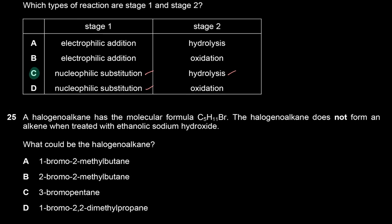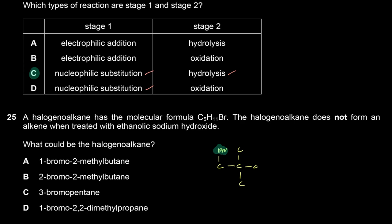A halogenoalkane with molecular formula C₅H₁₁Br does not form an alkene when treated with ethanolic NaOH — it does not undergo elimination. For elimination, the neighboring carbon must have a hydrogen. Here, the carbon neighboring the bromine has no hydrogen atoms. The compound is 1-bromo-2,2-dimethylpropane. The answer is D.